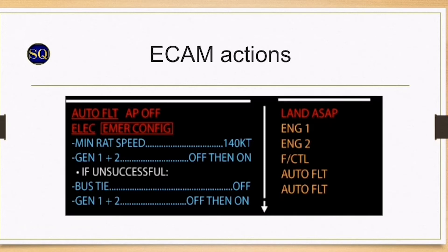As only the EWD is available, disciplined use of the ECAM control panel is essential. The minimum speed for the RAT is 140 knots. Below 140 knots, the RAT stalls and the aircraft returns to flight on batteries only.